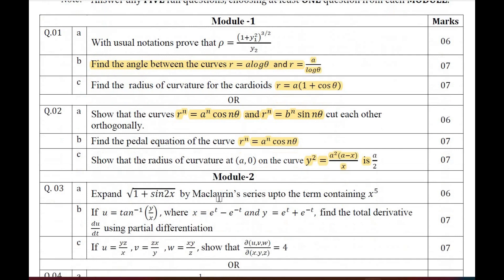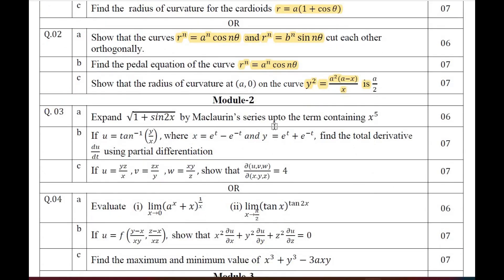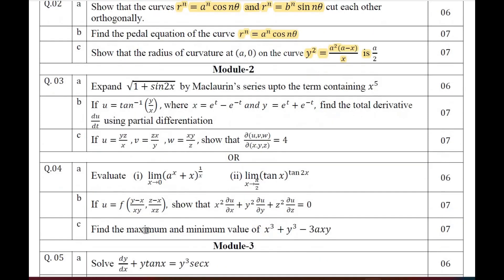Moving on to Module 2 of Model Question Paper 2. Question 3 includes one problem on Maclaurin series, one on total derivative, and one on Jacobian. Question 4 includes one problem on L'Hôpital's rule, one on composite functions, and one on maxima and minima.